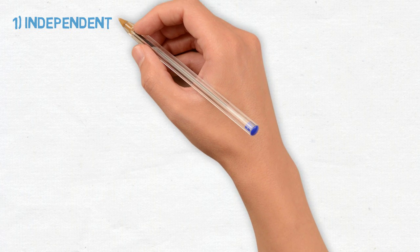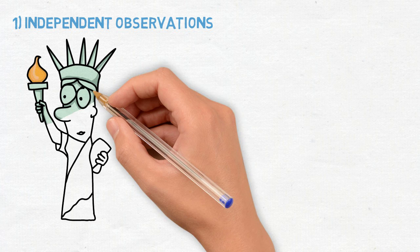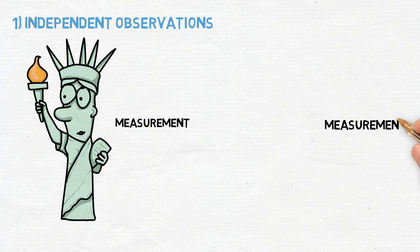Data is said to be independent when there is no relationship between individual measurements. This assumption is best met by design.